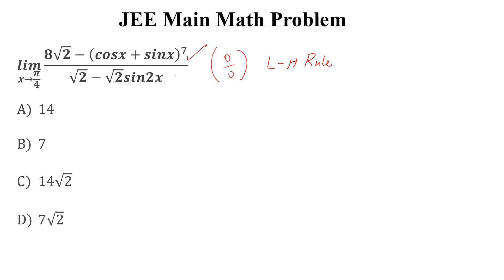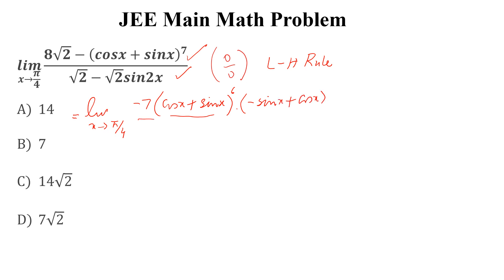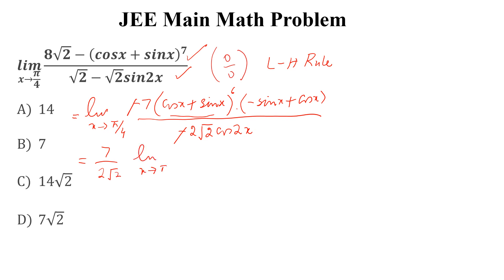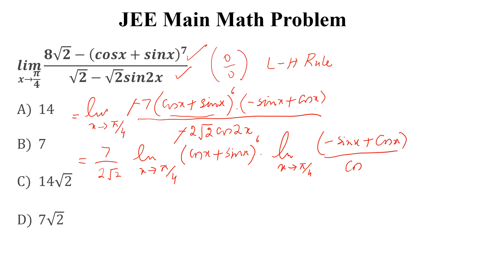We will take the derivative of the numerator and denominator. So the next step is: limit x approaches to pi by 4 of 7 times (cos x plus sin x) to the power 6, times (minus sin x plus cos x), divided by minus 2*sqrt(2)*cos(2x). The minus signs cancel, and we can write 7 divided by 2*sqrt(2) times the limit of (cos x plus sin x)^6 times (minus sin x plus cos x) divided by cos(2x).